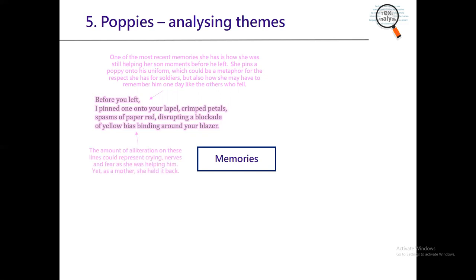On the yellow bias binding: disrupting a blockade of yellow bias binding around his blazer. The amount of alliteration on these lines could represent crying, nerves, fear, or resentment — all these different emotions. But as a mother, she still held all of that back.